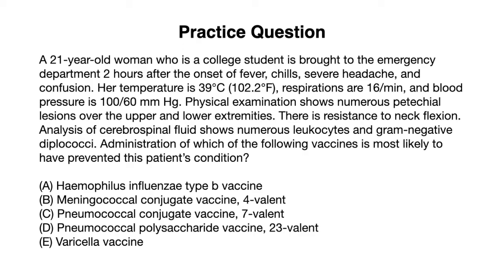To answer this, let's identify the diagnosis. We have a college-aged woman presenting with fever, petechiae, nuchal rigidity, and CSF positive for a gram-negative organism. Given that it's gram-negative diplococci, we're most likely thinking of Neisseria meningitidis. The correct answer is the meningococcal vaccine — the only option that covers against Neisseria meningitidis. This patient likely missed one or both doses at 11 to 12 and 16 years of age, placing her at greater risk compared to someone fully vaccinated.